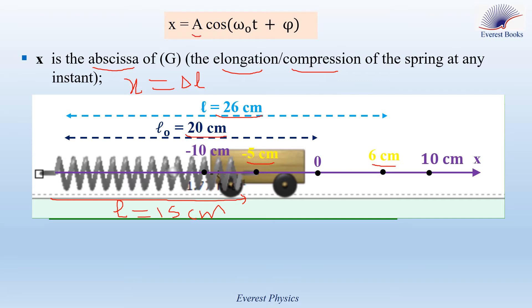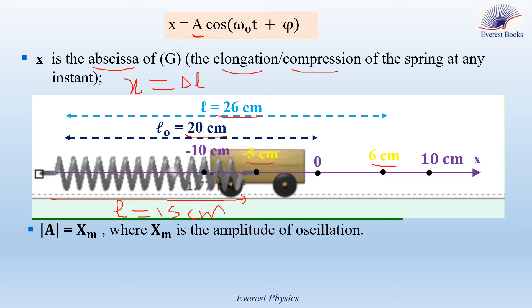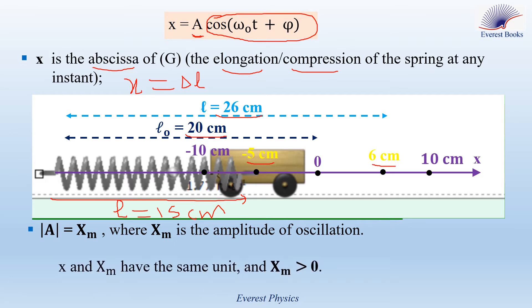What does A represent? The absolute value of A equals xm. xm is the amplitude, one of the properties of oscillatory motion. Since cosine(omega 0 t + phi) has no unit, x and A have the same unit — if A is in centimeters, then x is in centimeters; if A is in meters, then x is in meters. Note that xm is always positive.